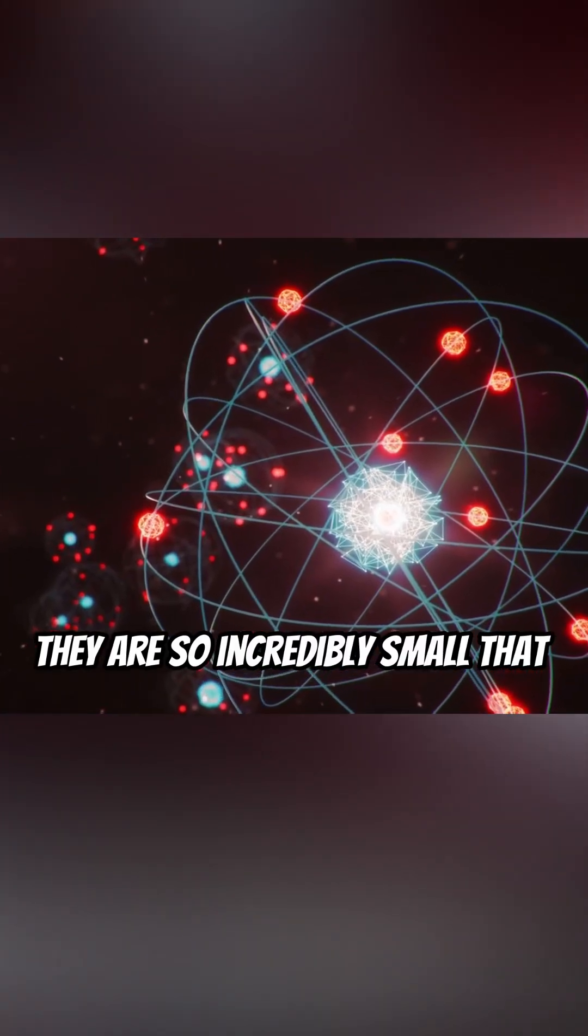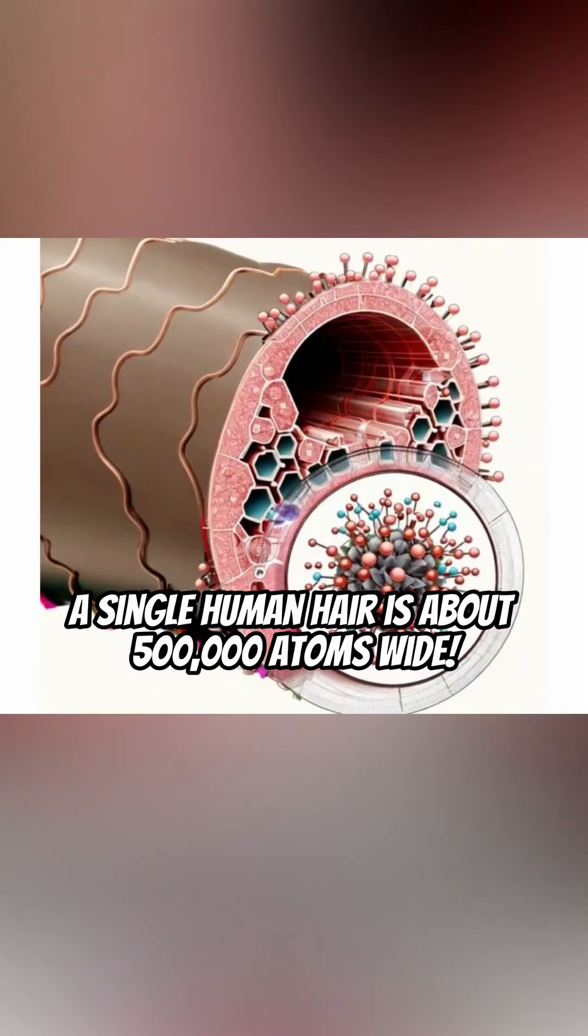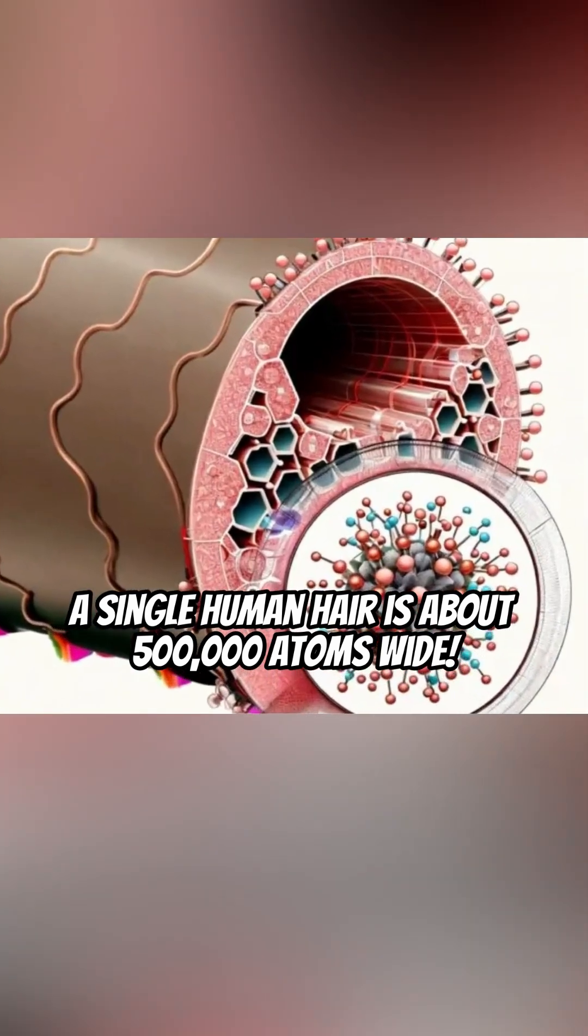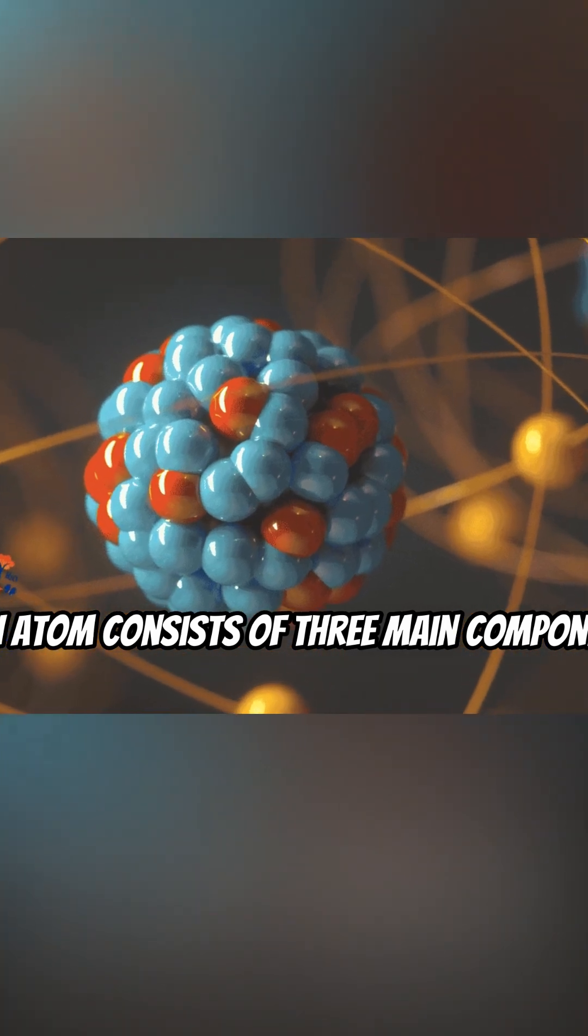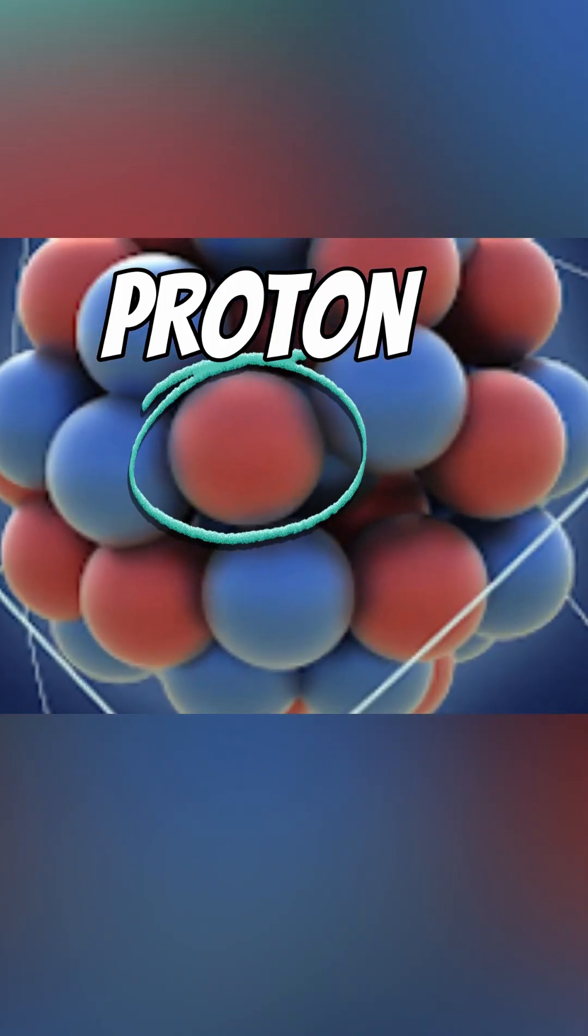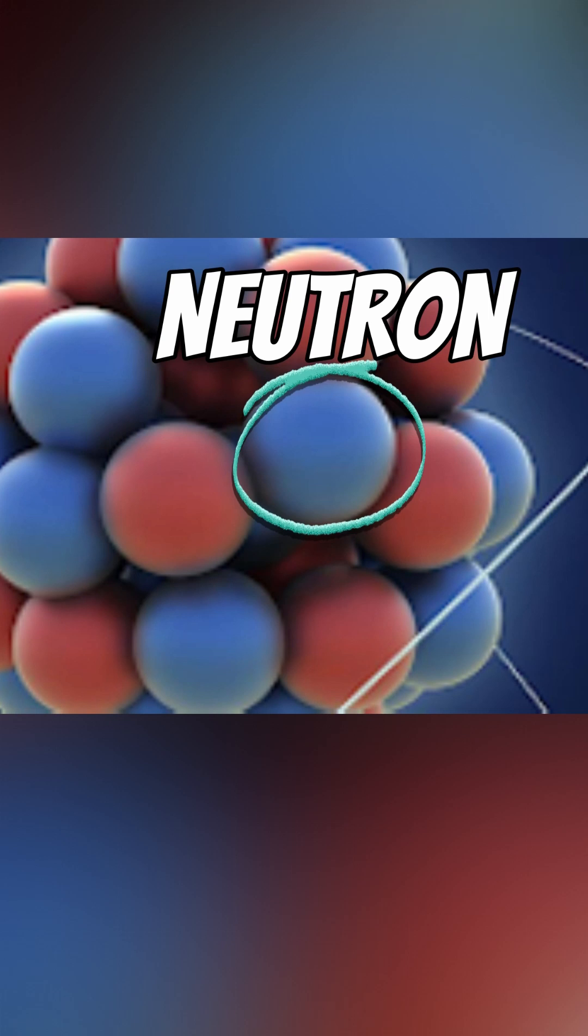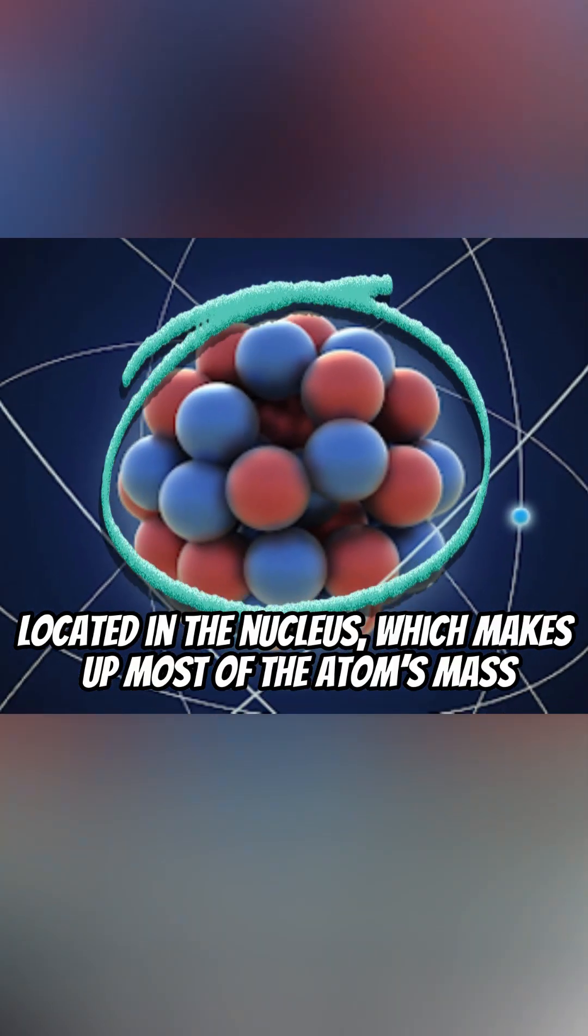They are so incredibly small that a single human hair is about 500,000 atoms wide. Each atom consists of three main components—protons, positively charged, and neutrons, neutral, located in the nucleus, which makes up most of the atom's mass.